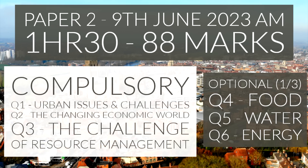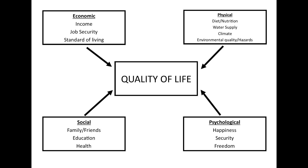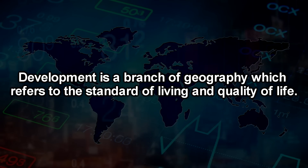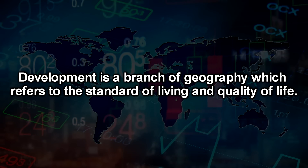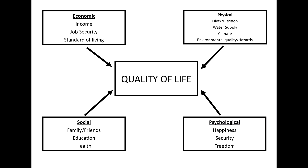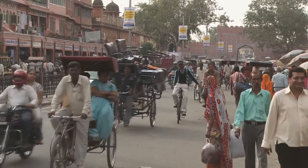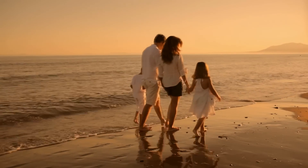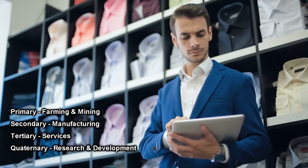We now look at section B, the changing economic world unit. It's important to recognise the differences from the urbanisation unit: urbanisation focuses on cities, while changing economic world looks at countries and how their economy has changed quality of life. We start by defining quality of life and its impacts, breaking it down into economic, physical, social and psychological factors. We should also have an understanding of LICs, NEEs and HICs around the world, and the differences between primary, secondary, tertiary and quaternary industries.